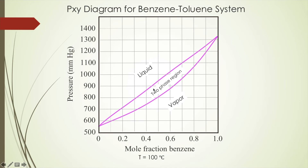Same as the Txy diagram, inside this curve there's a two-phase region. The only difference is that the y-axis corresponds to pressure in units of mmHg, so instead of finding temperature we find pressure. The mole composition is read the same way as with the Txy diagram — given a vapor phase mole fraction, draw a horizontal line across the two-phase region to find the liquid phase mole fraction, where the lower pressure side corresponds to the vapor phase.